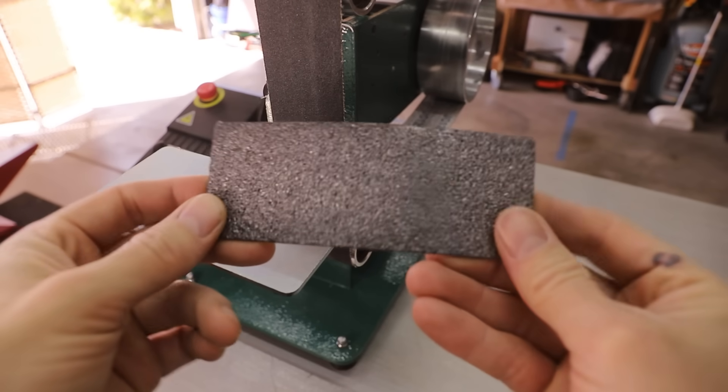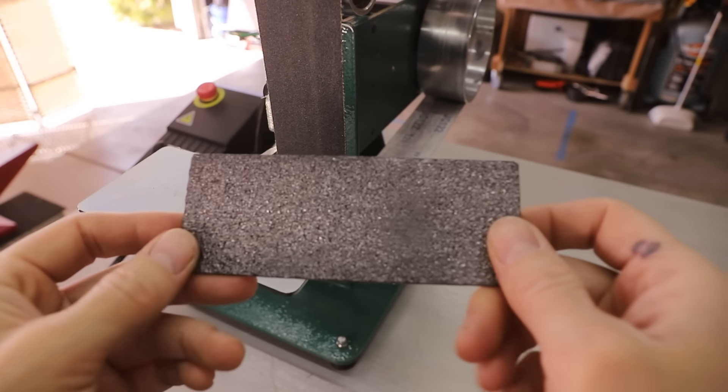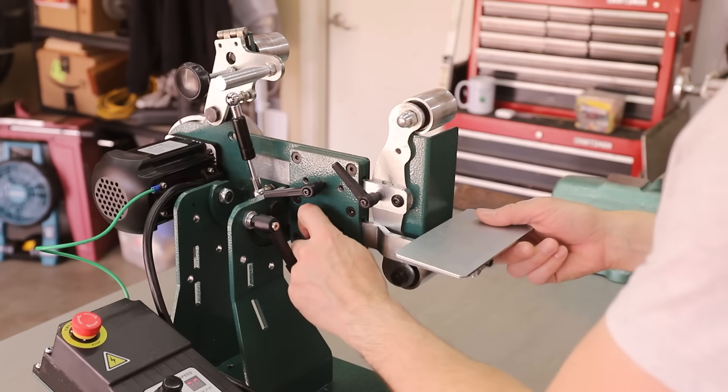The platen that comes with the grinder is just this piece of thin graphite that sticks to the platen bracket, and it's basically worthless.